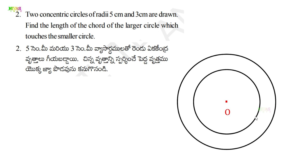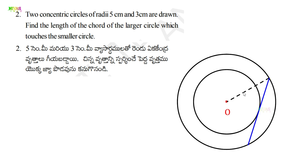I think we are drawing a chord here. The chord is in the large circle and touches the small circle — the tangent is on the small circle. So I am drawing a chord here. This is the small circle. Now I am drawing the radius here.